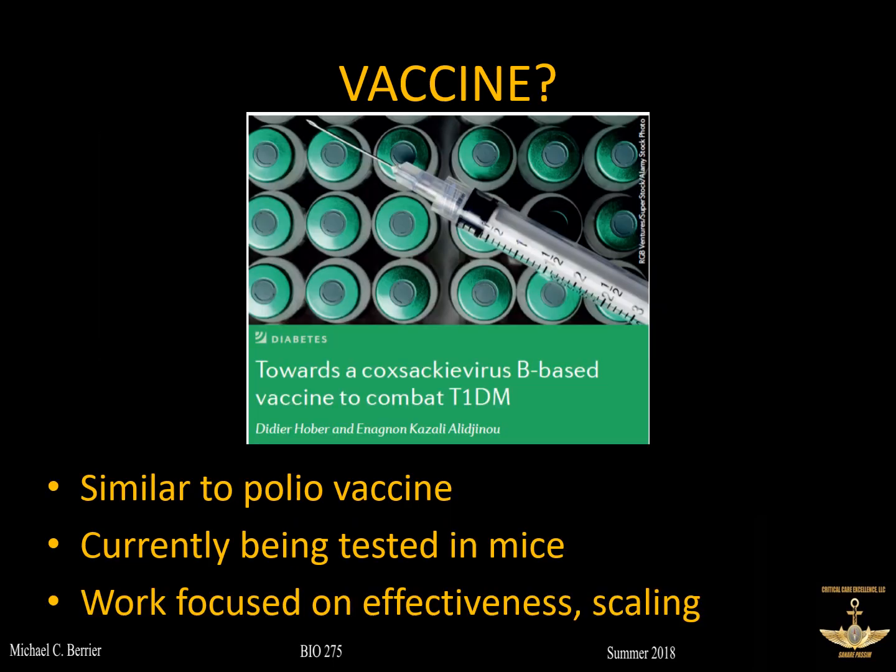Can we vaccinate against Coxsackie B? This work is ongoing. An article from this year describes diligent work toward a Coxsackie B-based vaccine, hoping to vaccinate kids when they're young — especially those with a genetic predisposition — alongside their other vaccines. It's similar to the polio vaccine because Coxsackie B is an enterovirus of the same family as poliovirus, so vaccine development is following a similar path. It's currently being tested in mice, has been approved in other countries, and current work focuses on effectiveness, safety, and scaling production.